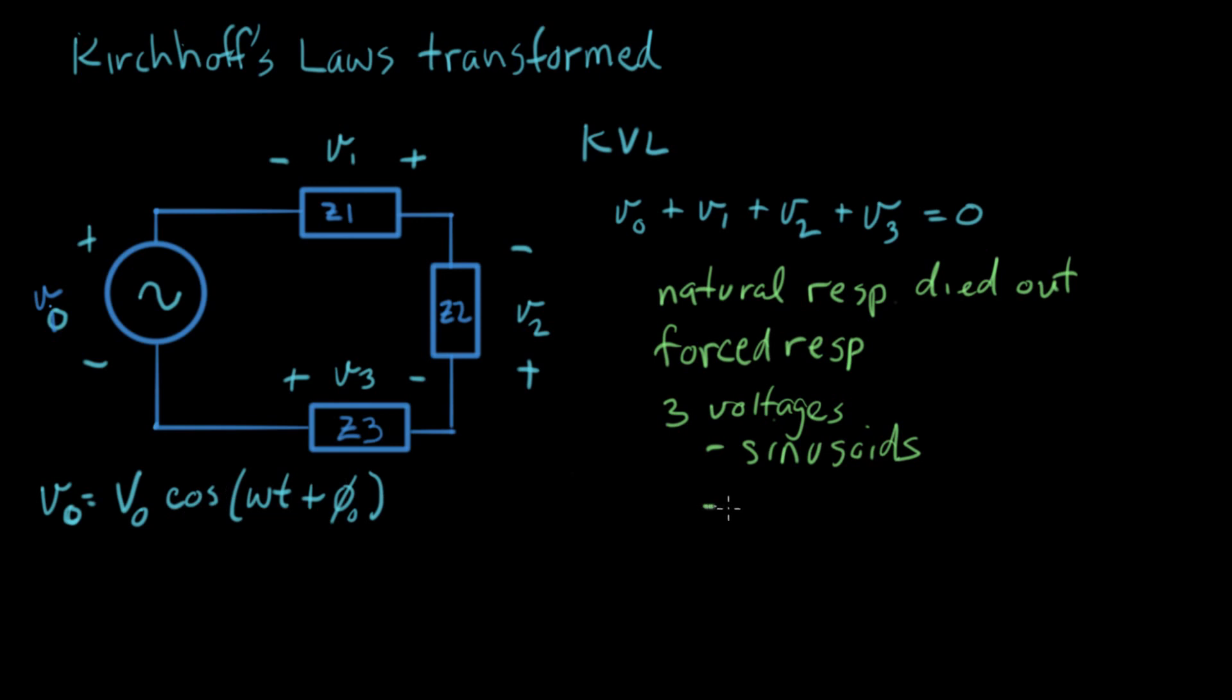The other thing we know: they're all gonna have the same ω. The frequency of all these voltages is gonna be identical to ω here. In an AC circuit, when you're driving it from a frequency, every other frequency in the system is the same frequency. This is a linear system with linear components. Linear components don't create new frequencies. They're all ω.